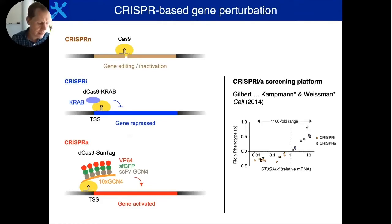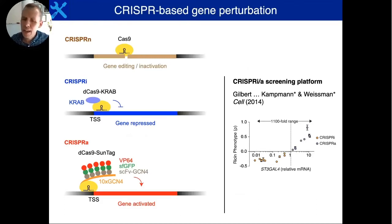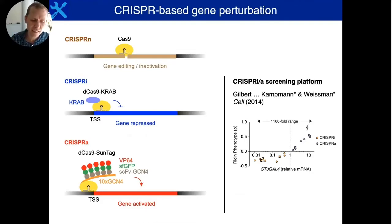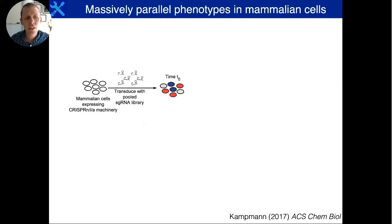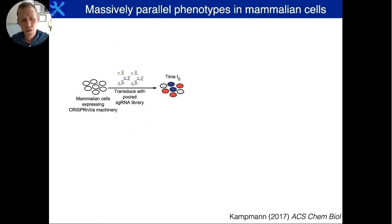We can use dead Cas9 as a recruitment platform for transcriptional repressors such as the KRAB domain, which can be used to knock down gene expression, or transcriptional activators, which can be used to activate genes. When I was a postdoc in the Weissman lab at UCSF, I co-developed a genome-wide screening platform based on these technologies that we called CRISPRi and CRISPRa. We showed that we can tune up and down the expression of human endogenous genes over many orders of magnitude, and we can ask how the expression level of a gene of interest affects a phenotype of interest. We can do this not only one gene at a time, but in massively parallel genetic screens to identify in an unbiased way all genes interesting in a biological process of interest.